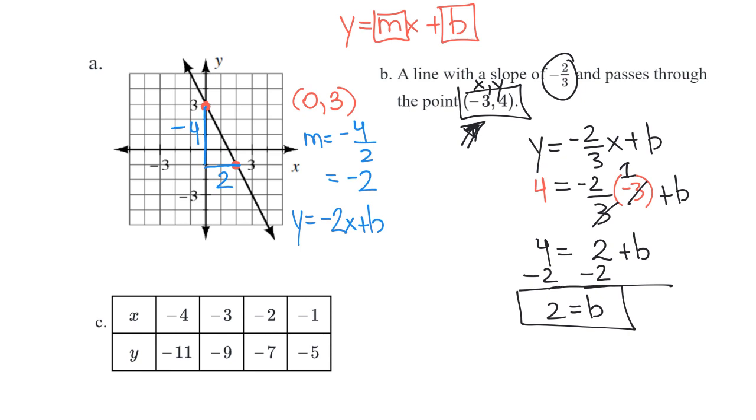Woo-hoo! I now have the y-intercept and the slope. So my equation would be y equals negative two-thirds x.